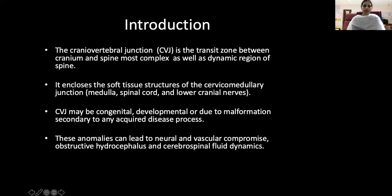Introduction. The Cranial-Vertebral Junction is the transit zone between the cranium and spine — the most complex as well as dynamic region of the spine. It encloses soft tissue structures of the cervical-medullary junction like the medulla, spinal cord, and lower cranial nerves. CVJ anomalies can be congenital, developmental, or due to acquired disease processes, leading to neural and vascular compromise, obstructive hydrocephalus, and cerebrospinal fluid dynamics abnormalities.